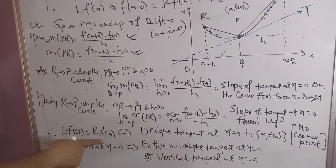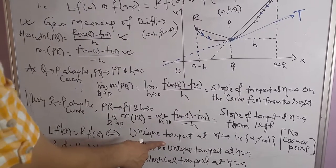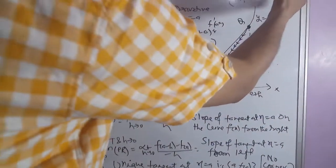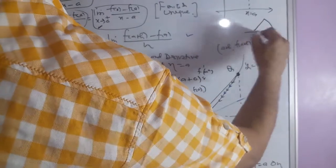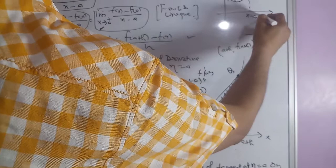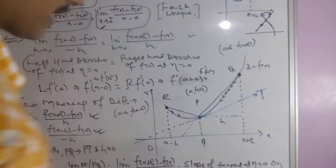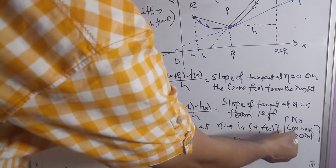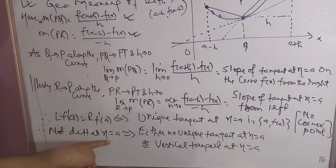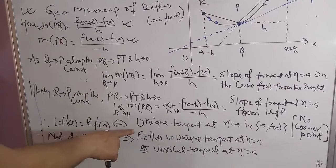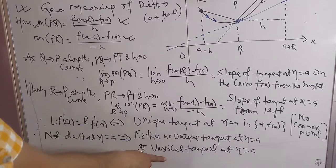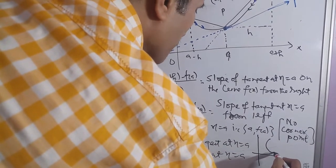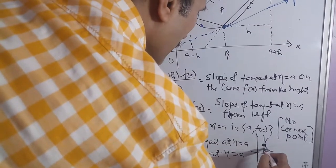Left-hand derivative at a equal to right-hand derivative at a implies a unique tangent at x equal to a, that is, no corner point. If there is a corner point, the tangent from the left and tangent from the right are two different lines. A function is not differentiable at x equal to a means either no unique tangent, or a vertical tangent at x equal to a.